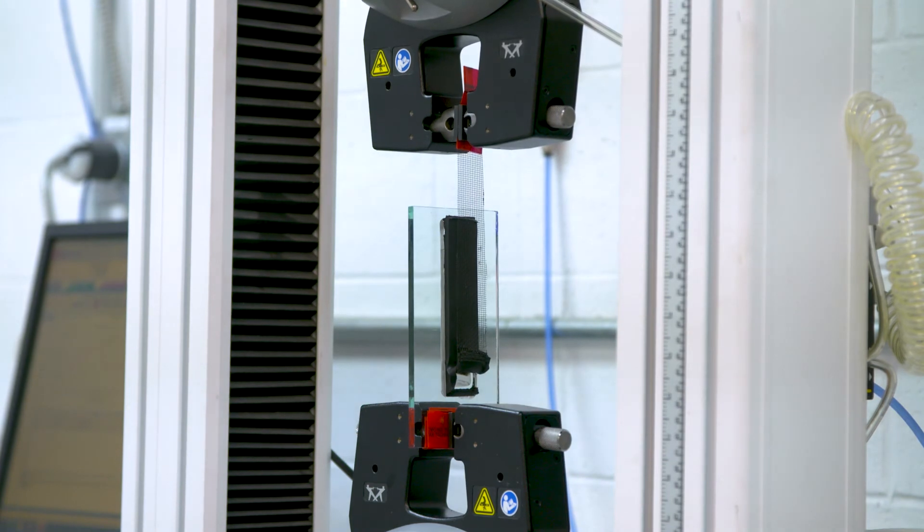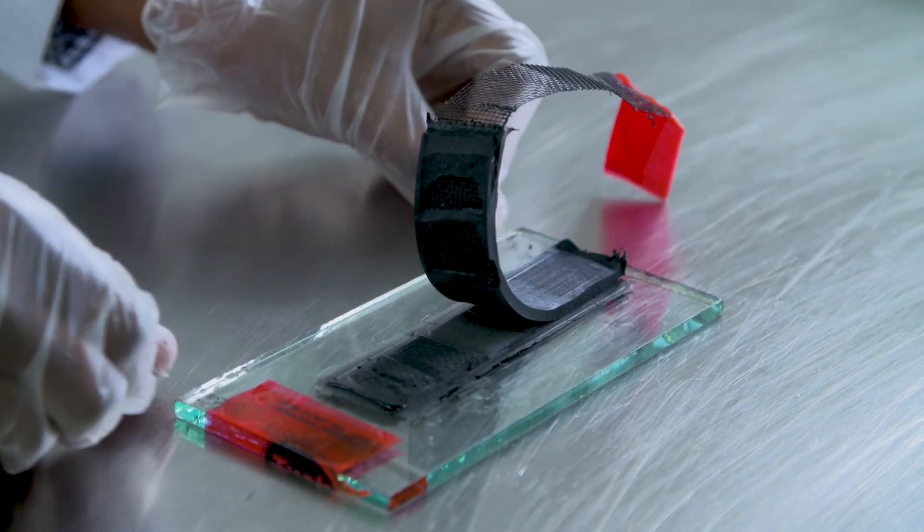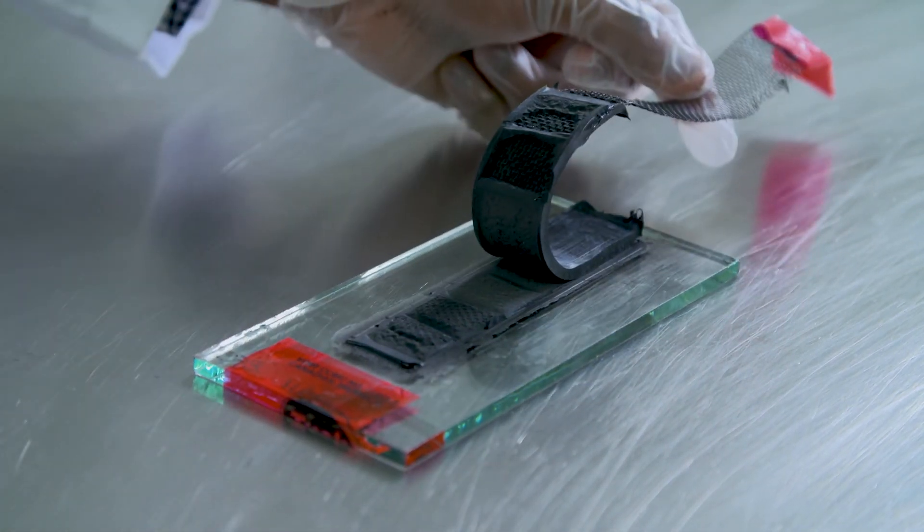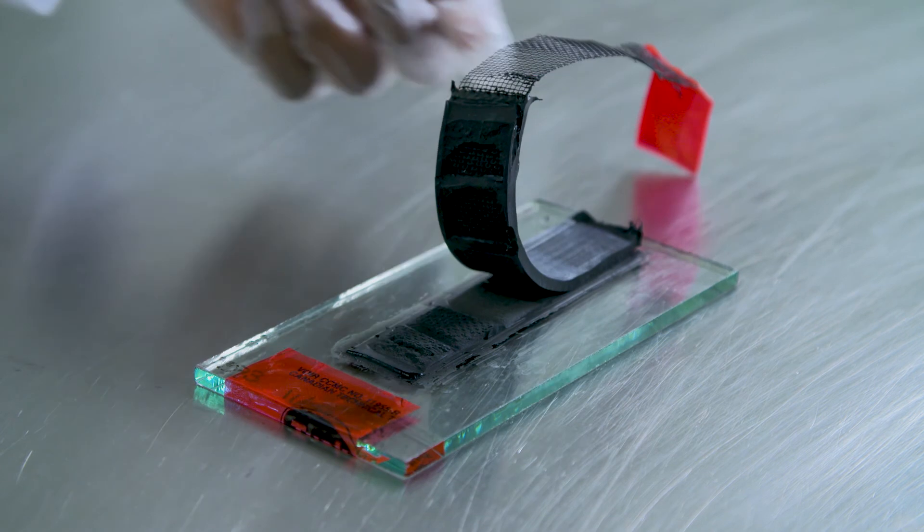This test gave us the expected results. The break is cohesive, which means that the rupture occurs at the level of the sealant and not at the level of the substrates. We also have a force that meets the expectations of this type of sealant.